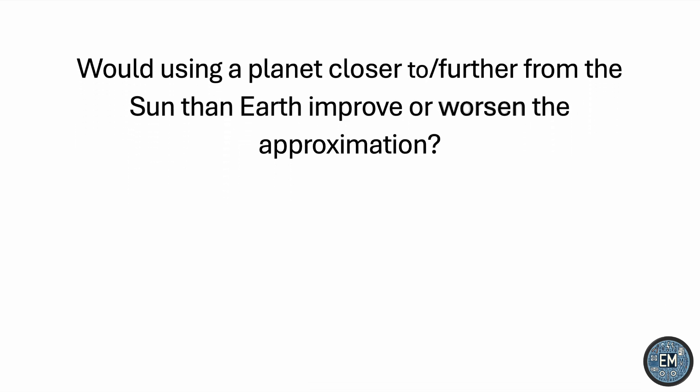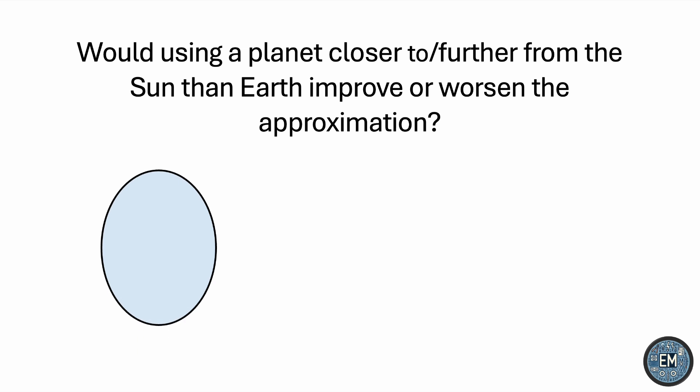In other words, is a larger ellipse or a smaller ellipse better approximated as a circle? If it's a larger ellipse, then we may want to consider repeating the process using a planet like Saturn or Jupiter, but if it's a smaller ellipse, then maybe using Mercury or Venus will yield more accurate results. Which one is it? Let me know what you guys think in the comments down below.